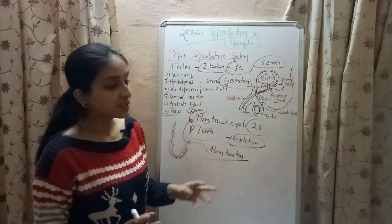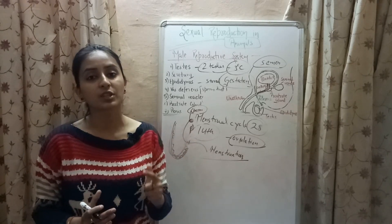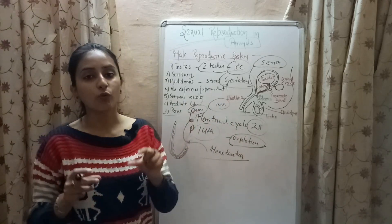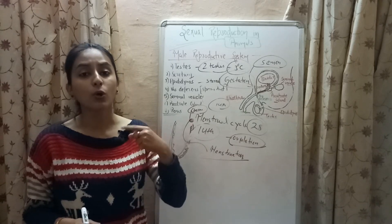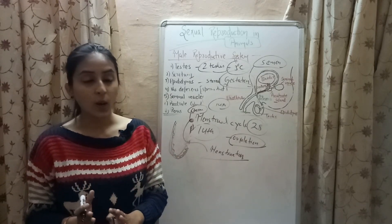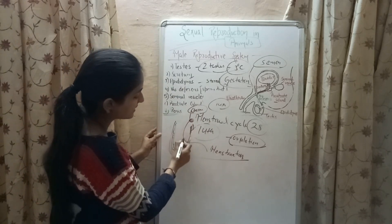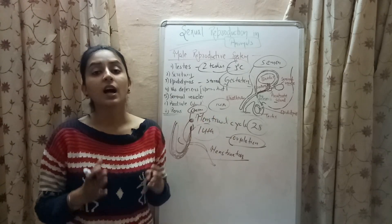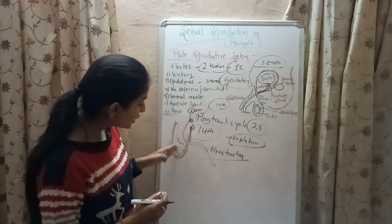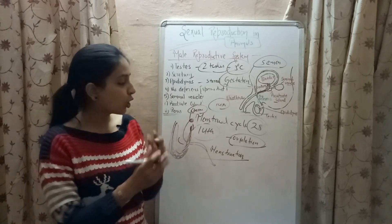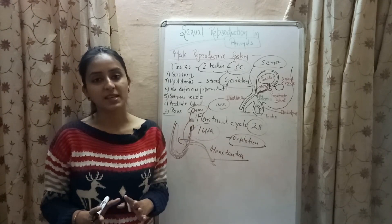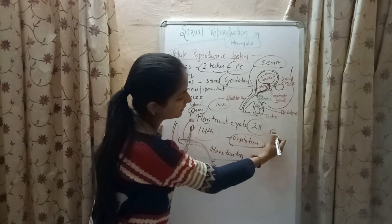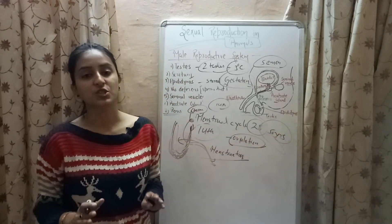The removal of the inner layer of the uterus along with the dead ovum from the vagina of human females is known as menstruation, commonly called periods, because it gets repeated after every 28 days if the egg is not fertilized. Menstruation is the breakdown and removal of the inner thick layer of the uterus and blood vessels along with the dead ovum, from the body of females in the form of vaginal bleeding. The process of menstruation stops permanently after the age of 50 years.